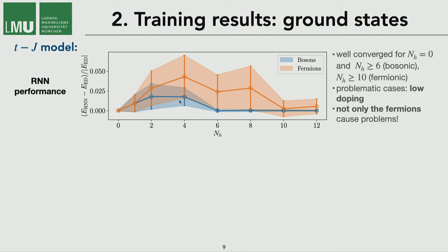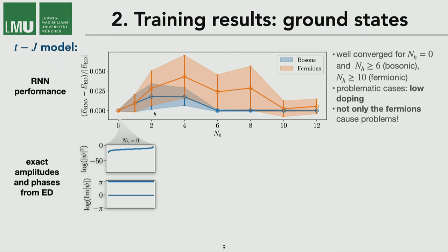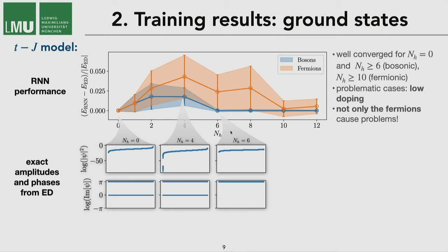The first test to find out where this issue comes from was to look at the exact amplitudes and the exact phases from exact diagonalization. The first thing that we immediately see if we compare a point where the method works very well and a point where it works very badly is that we have a much higher spread of different amplitudes of the exact quantum state when we get into this more difficult region. And in particular we have a lot of amplitudes that are very small. Additionally the thing gets more complicated if we use fermions because then also the phases look more complicated.